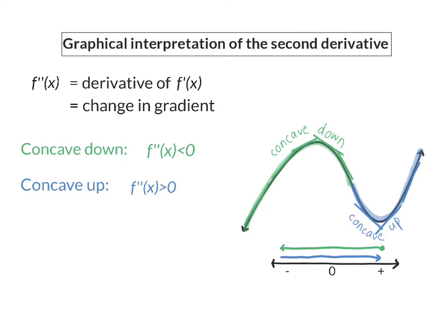The point on a curve where it changes from concave down to concave up is called the inflection point, and at this point the second derivative is equal to zero.